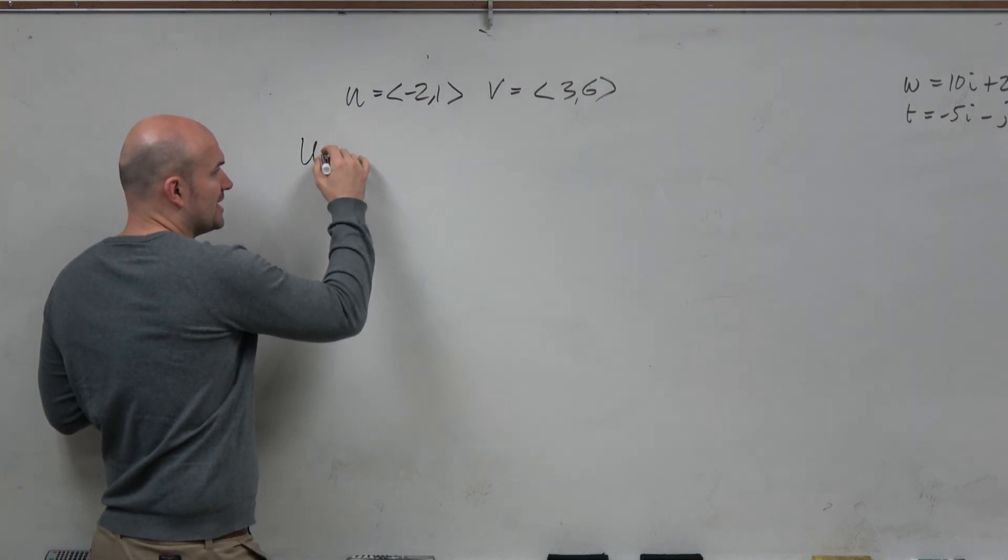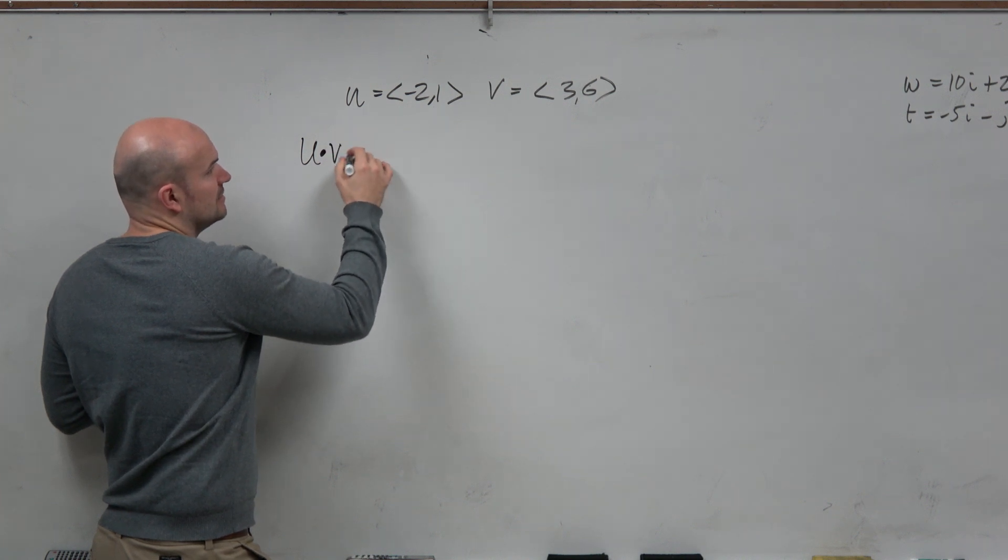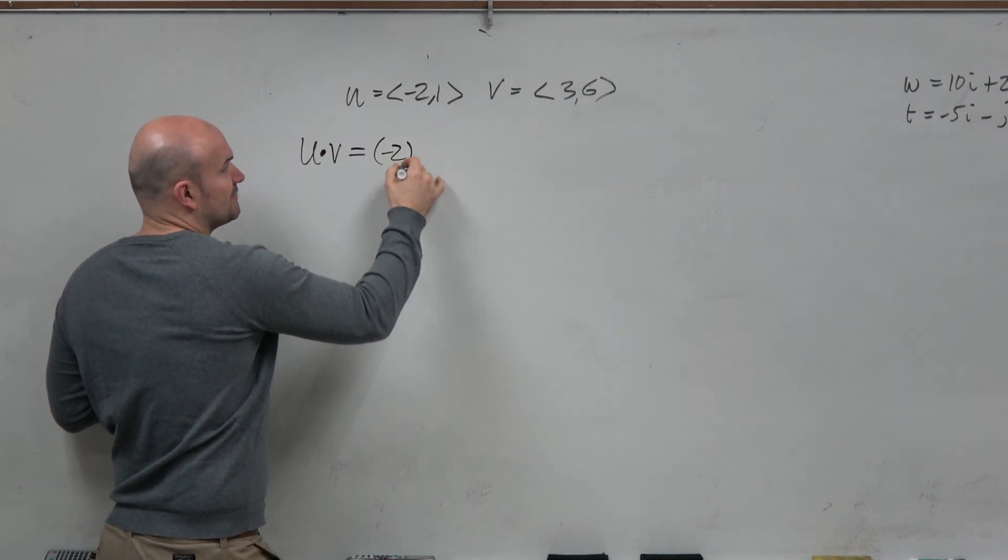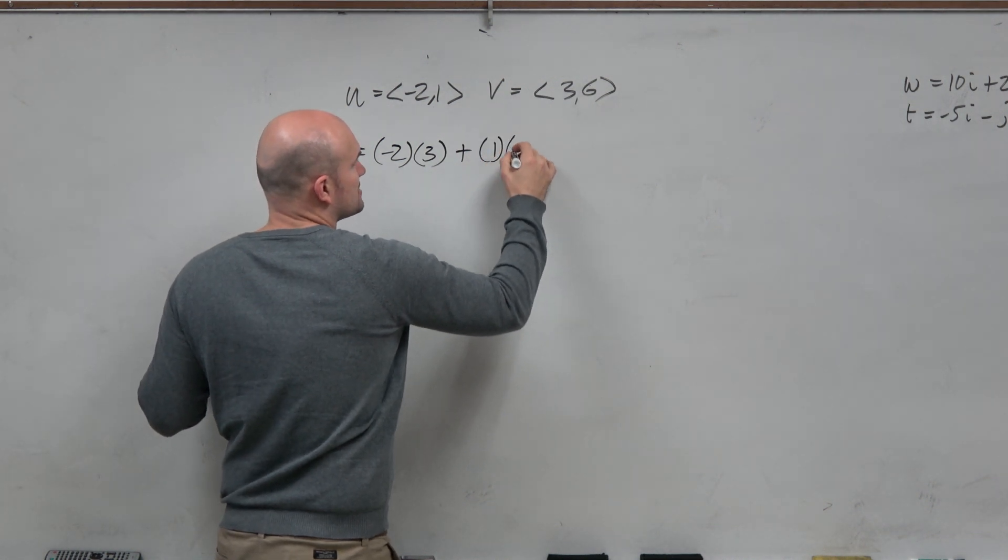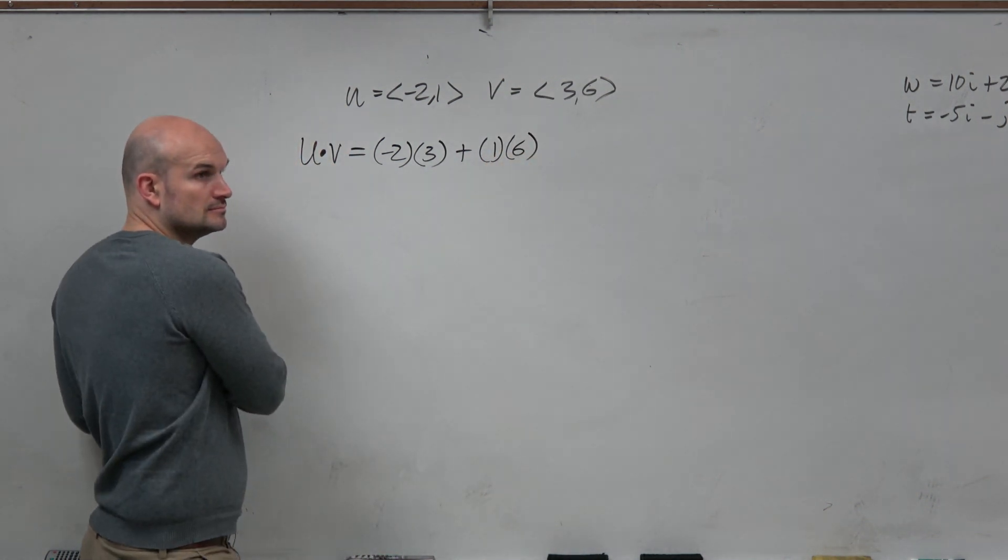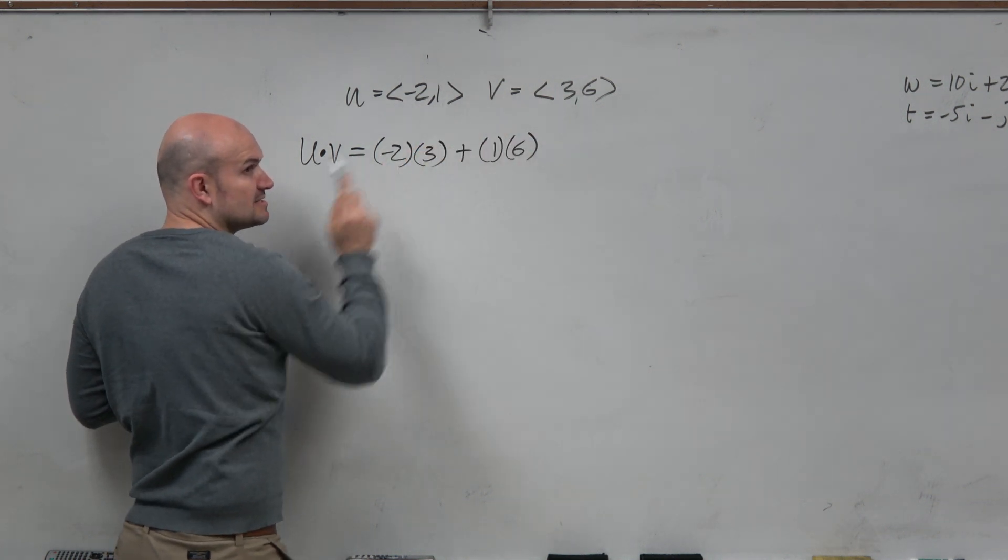So again, to review the dot product, u dot v, all we're simply going to do is take the product of the first two components, add them to the product of the second two components. This times this plus this times this.